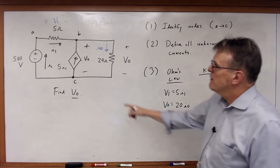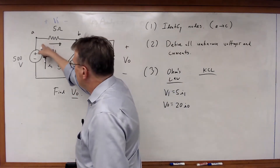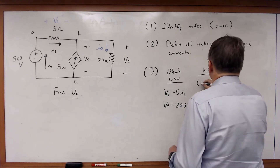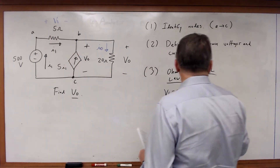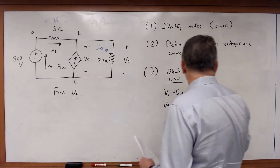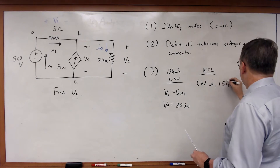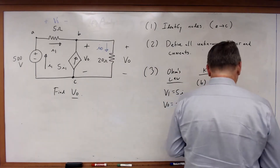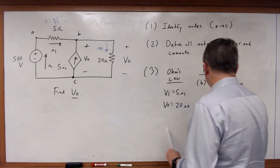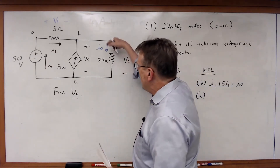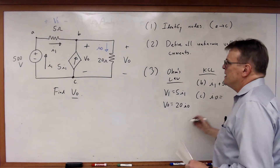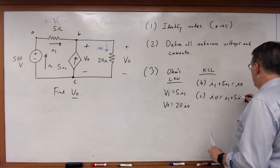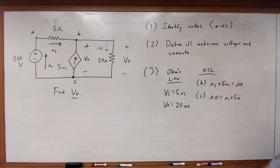KCL: for node A, I1 equals I1 — that's trivial, not worth writing. For node B, I1 flowing in plus 5I1 flowing in equals I0. For node C on the bottom, I0 flowing in equals 5I1 plus I1 flowing out. Obviously those are the same equation — a dependent equation.